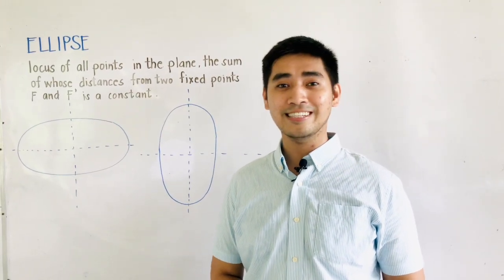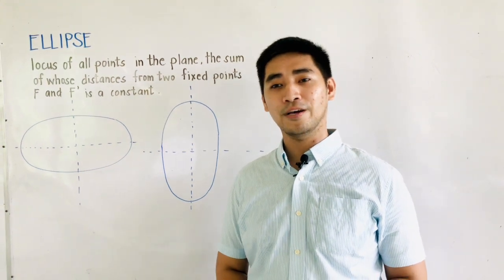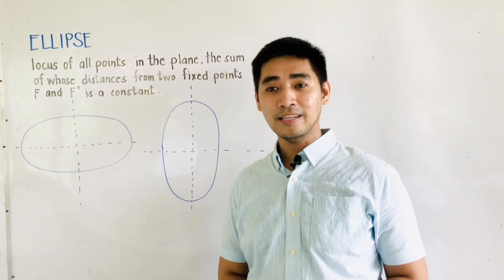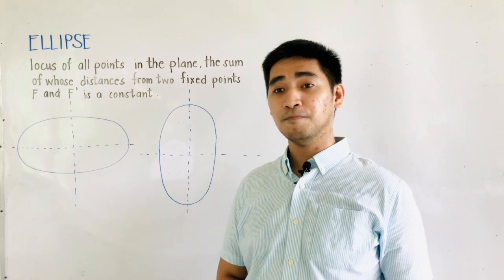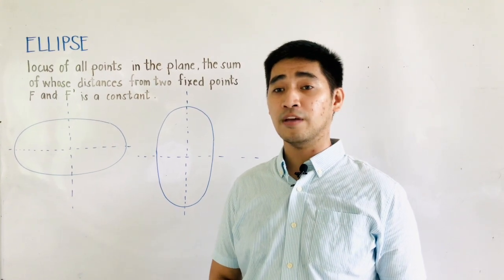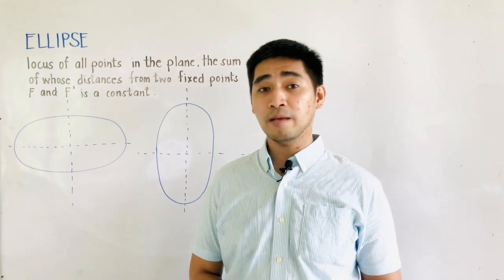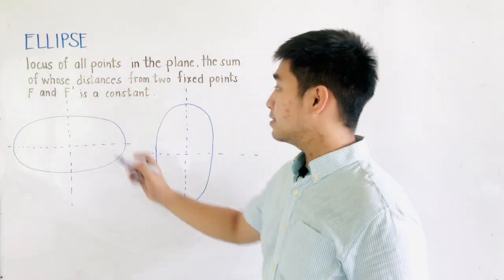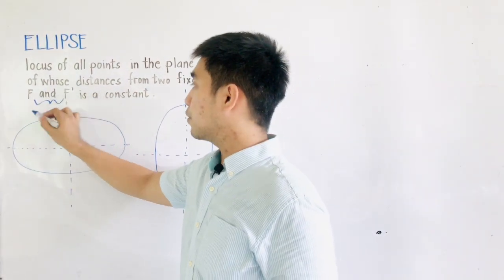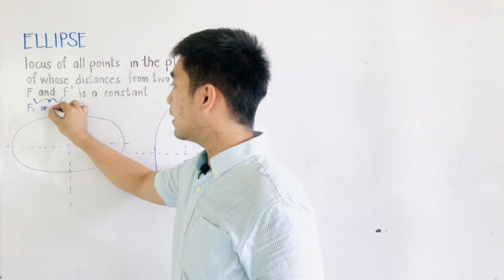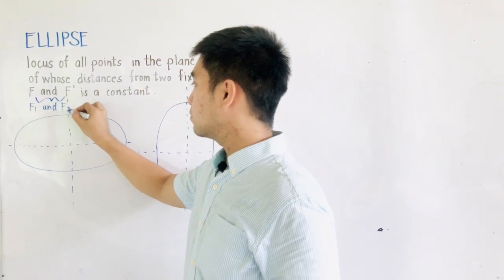So what is an ellipse? An ellipse is a locus of all points in the plane, the sum of whose distances from two fixed points F and F' is a constant. Some books will call this F1 and F2 instead.